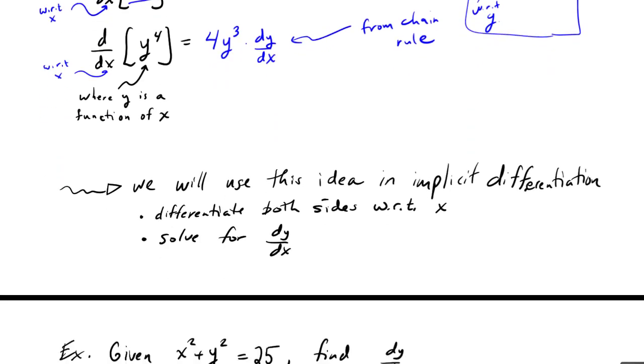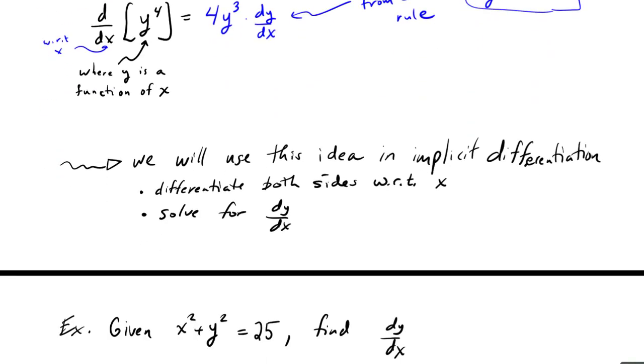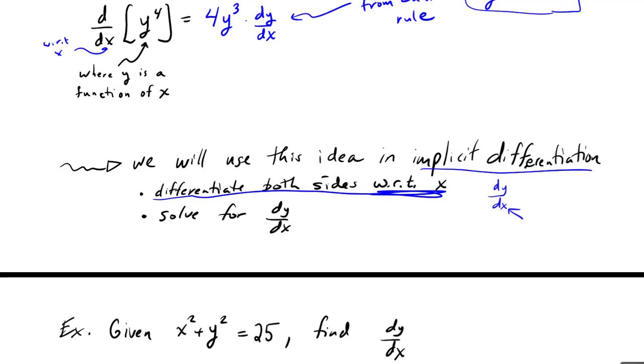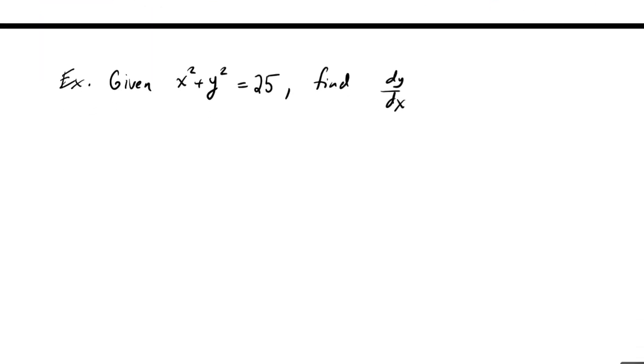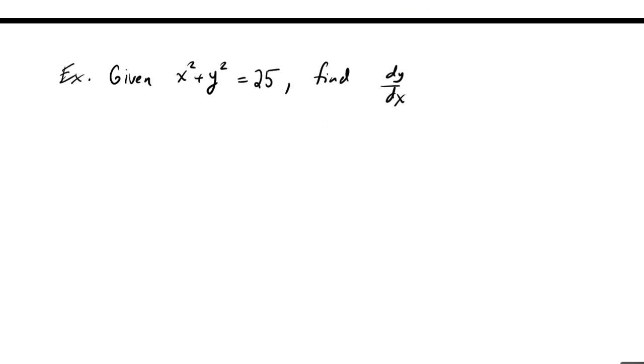We're actually going to use this idea in implicit differentiation. What we're going to do is take an equation, differentiate both sides with respect to x, assuming that we want to eventually find dy/dx, and then we'll actually just solve for dy/dx to get our derivative. Let's take a look at an example and walk through the process.